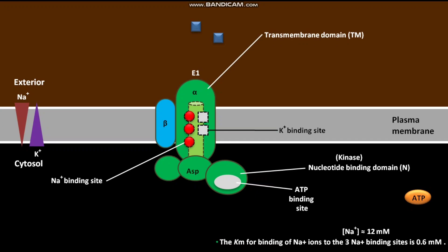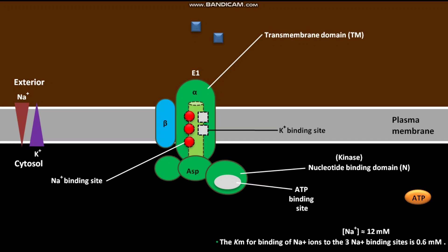One cytosolic ATP then binds to the ATP binding site in the nucleotide binding domain. This bound ATP is hydrolyzed to form ADP and a phosphate group. The phosphate group is transferred to a specific aspartate amino acid in the phosphorylation domain, and ADP is released into the cytosol. A high-energy acyl phosphate bond forms between the transferred phosphate group and the aspartate amino acid.